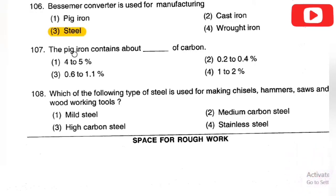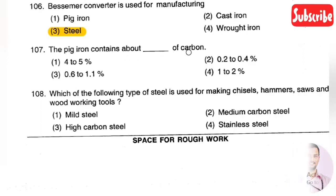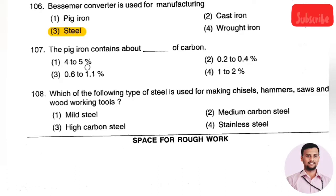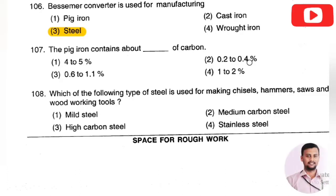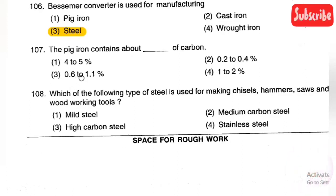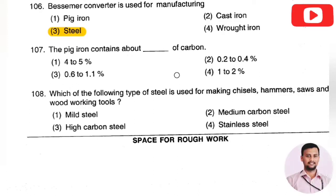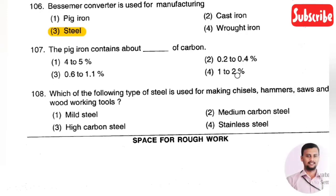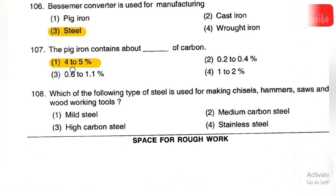The next question: pig iron contains about dash percent of carbon. The options are — Option 1: 4 to 5 percent, Option 2: 0.2 to 0.4 percent, Option 3: 0.6 to 1.1 percent, Option 4: 1 to 2 percent. The right answer is Option 1, that is 4 to 5 percent of carbon present in pig iron.